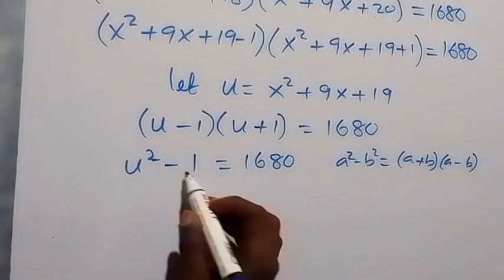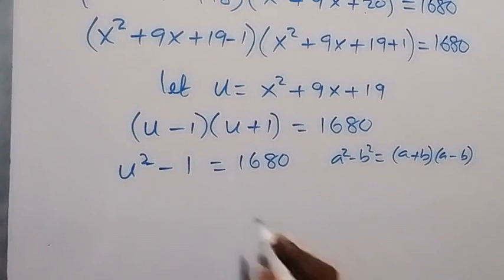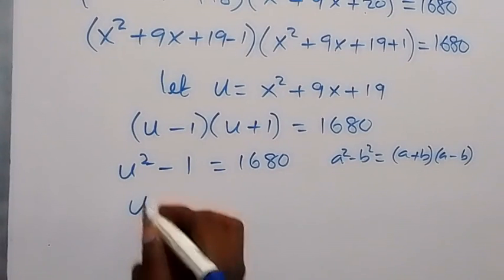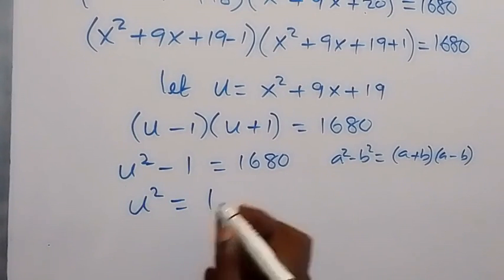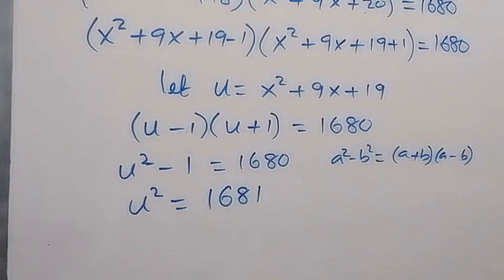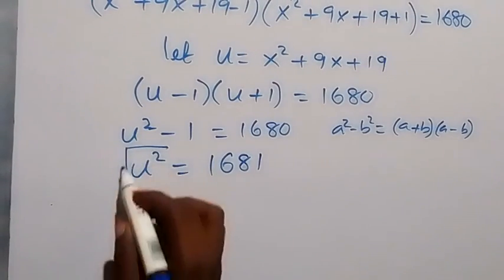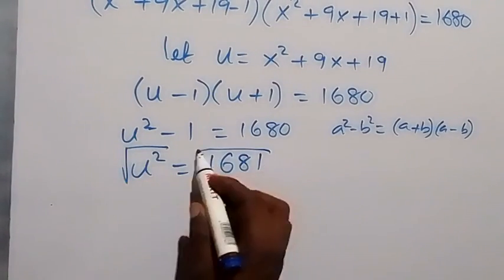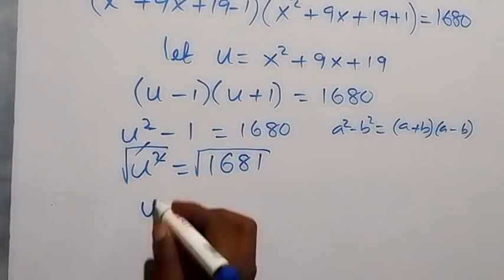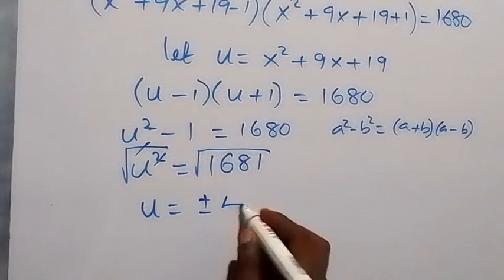Taking 1 to the other side gives u² = 1681. Taking the square root of both sides, u = ±41.